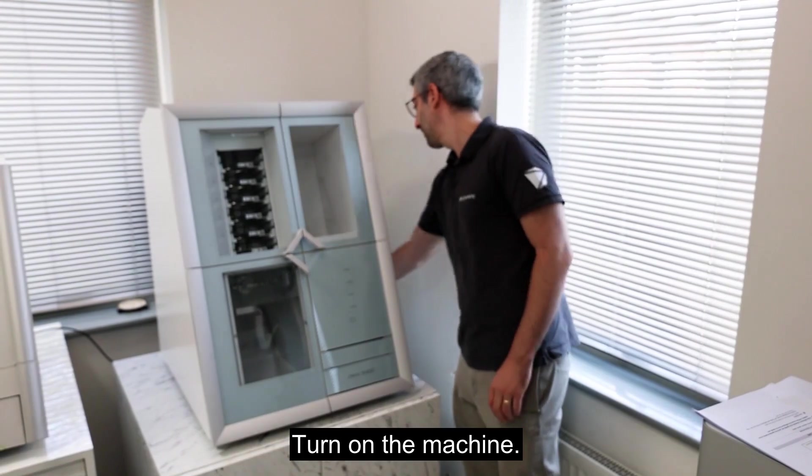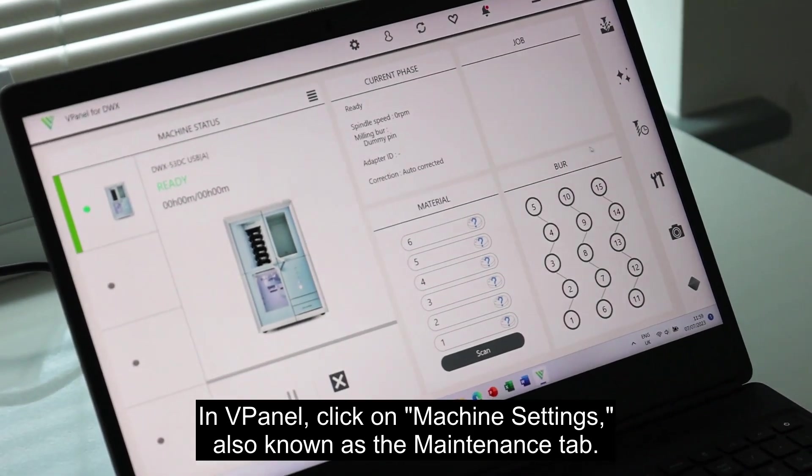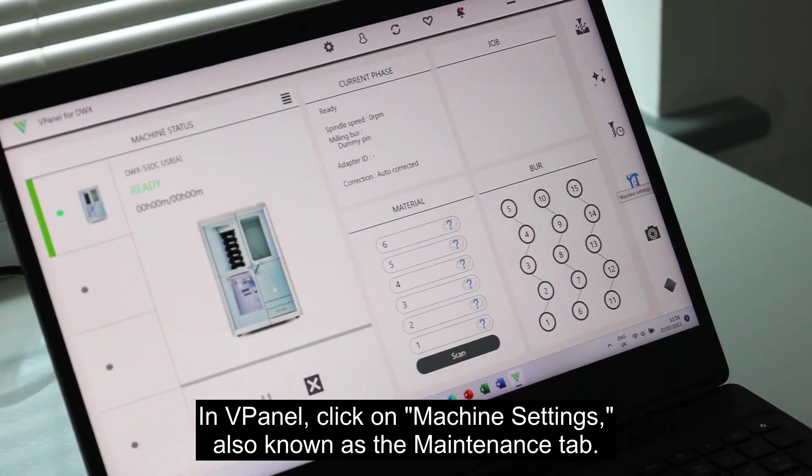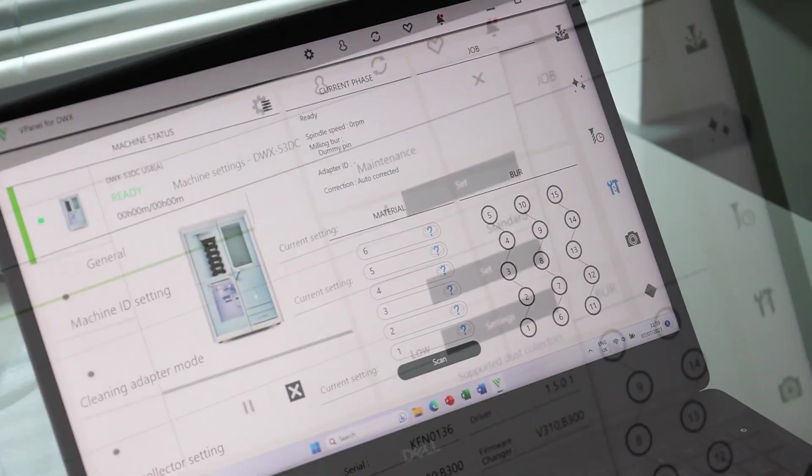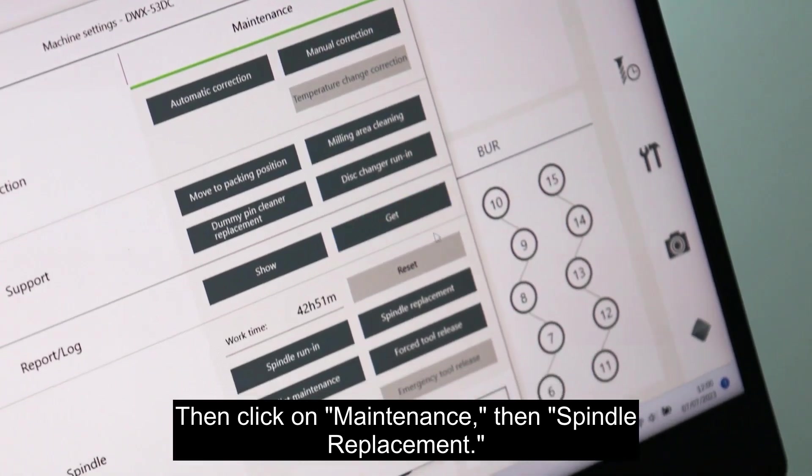Turn on the machine. In vPanel, click on machine settings, also known as the maintenance tab, then click on maintenance, then spindle replacement.